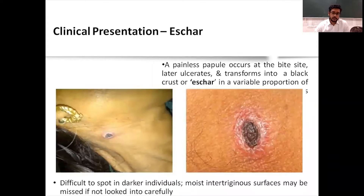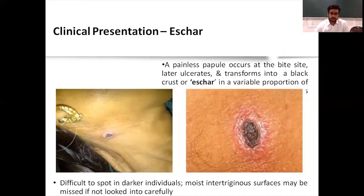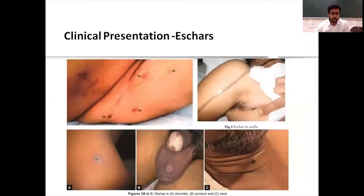Clinical presentation: a painless papule occurs at the bite site, which later ulcerates and transforms into a black crust or eschar in a variable proportion of patients. It is often difficult to spot in darker individuals, and eschar on intertriginous surfaces may be missed if not examined carefully. You must conduct a thorough physical examination. Eschar may be in the axilla, chest, back, gluteal region, or scrotal region — unless you have a high index of suspicion, you can't find it.